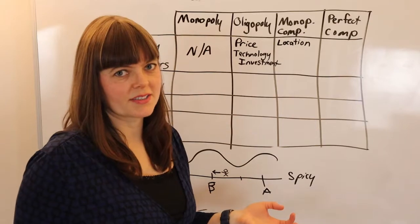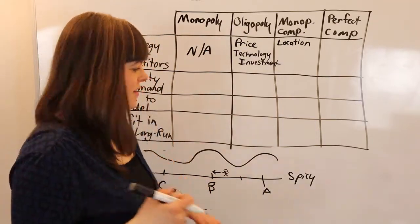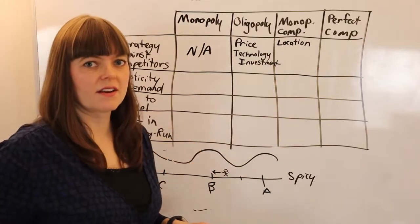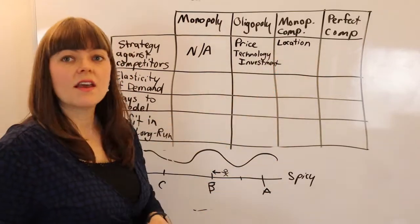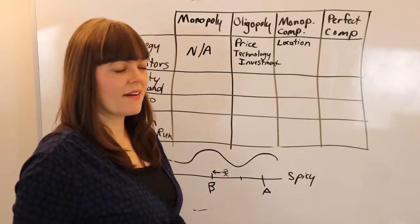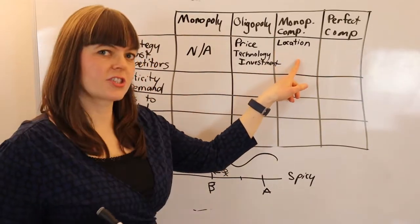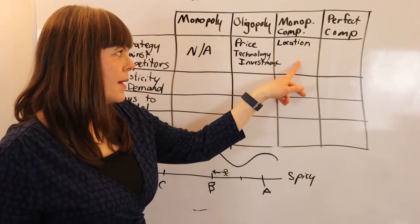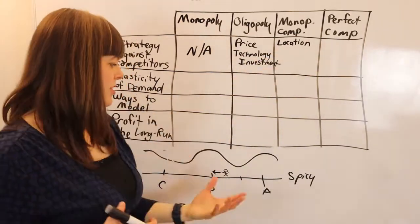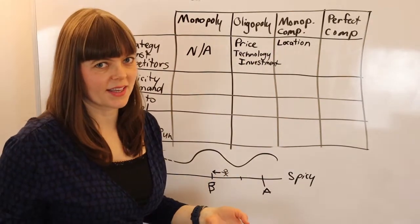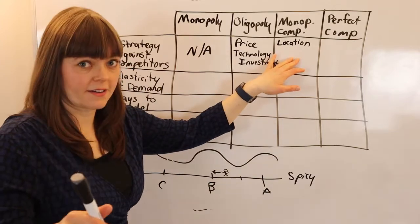By locating themselves strategically, monopolistic competition firms can gain more profits than if they placed themselves randomly or according to the chef's preferences rather than the population's average preferences. Location is one way of differentiating your product, so product differentiation is a key part here. We model it as location because location provides a nice modeling framework.